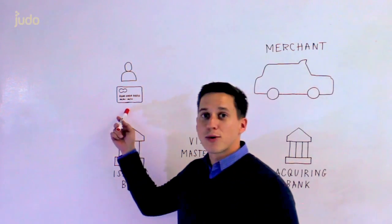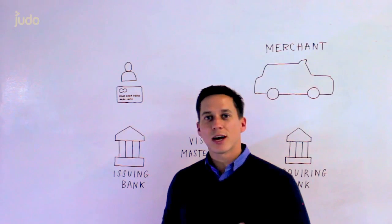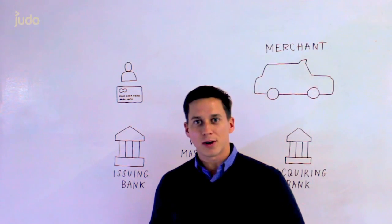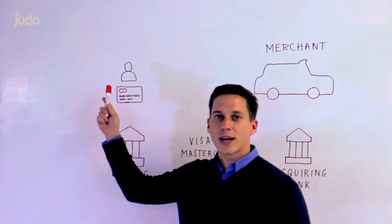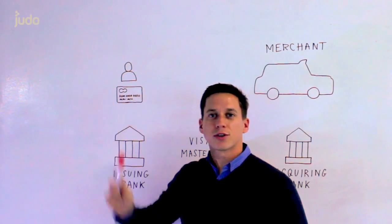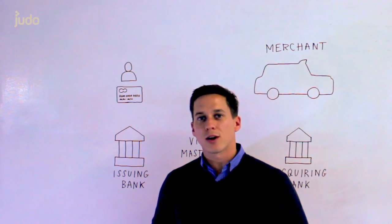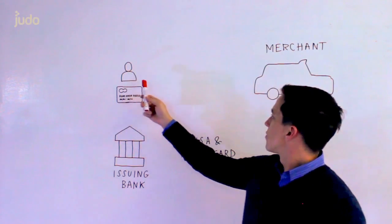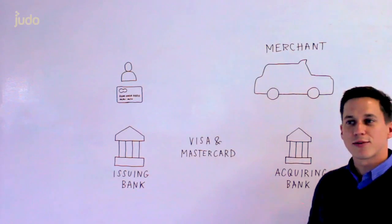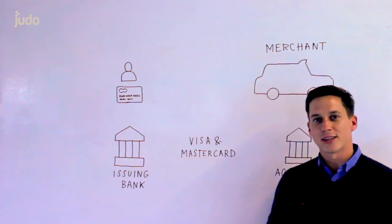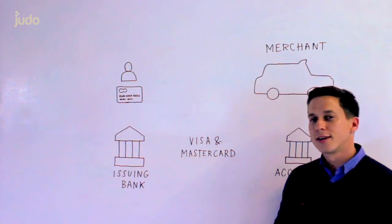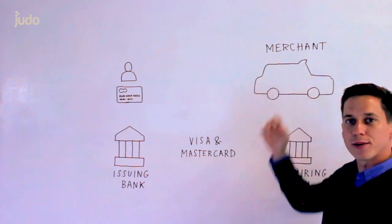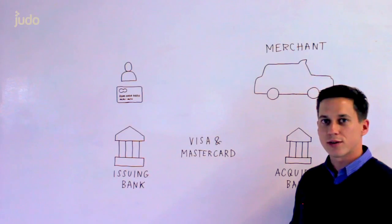First, and most importantly, we have your customer. Your customer is carrying some sort of a credit card in their wallet, or maybe in their brain if they've memorized the number. They're the ones who are saying, I'm going to provide money for this good or service and I'm going to use a credit card to initiate that payment. From the consumer you have the merchant, and in this case we've drawn a picture of a taxi — it's just because it's easier to draw than what most of our customers sell. The taxi merchant is the driver or the taxi company and they need to accept payment for the good or service they're delivering.